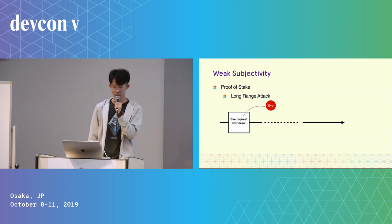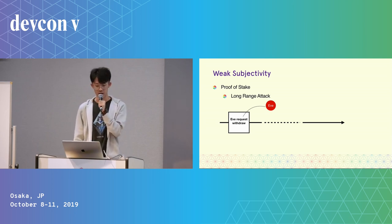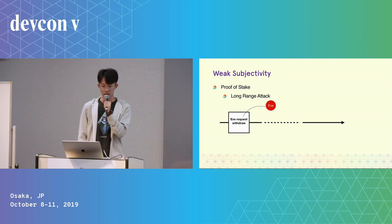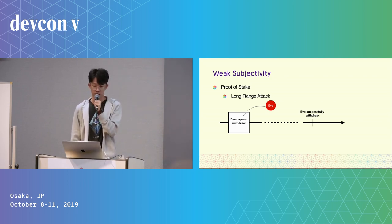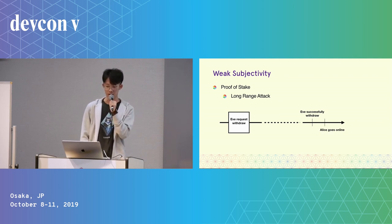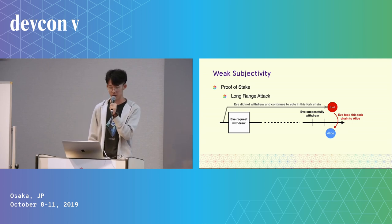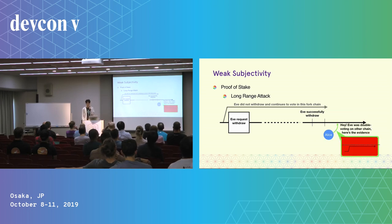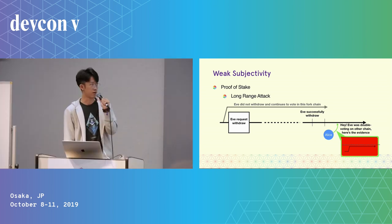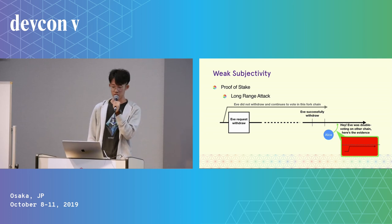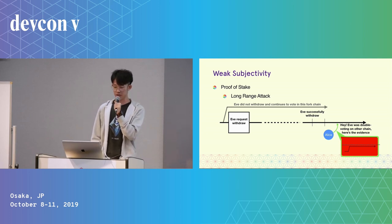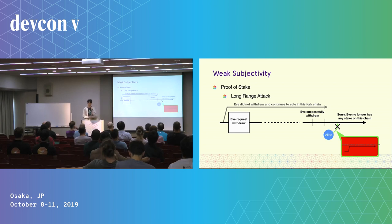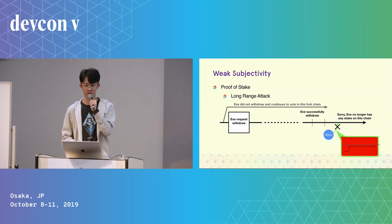And so this enables the long-range attack. Basically, in a long-range attack, say ETH is an attacker and first requests a withdrawal on the main chain. After some time, the withdrawal is successfully processed — now the attacker has no stake on the main chain. Later, when Alice goes online, the attacker can create a fork chain where they did not withdraw and continues to vote on the fork chain. The attacker can feed this fork chain to Alice. When Alice finds out she has been fed fork chains, she will try to use it as proof of double-voting, but will find out that the attacker no longer has any stake on the main chain.